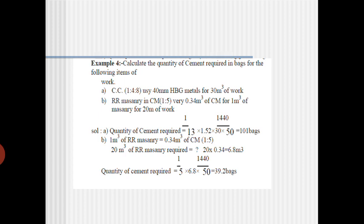For the second item — masonry work 1:5, where 0.34 cubic meters of cement mortar is required per cubic meter of masonry work, for 20 cubic meters of work. Total mortar = 20 × 0.34 = 6.8 cubic meters. Quantity of cement = (1/5) × 6.8 × 1440 ÷ 50 = 39.2 bags. For masonry mortar you do not add the ratio components; you use only 1/5 directly.